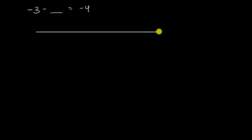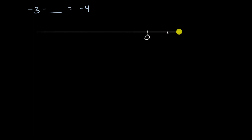Let me draw a straighter line. All right, that's a pretty good number line. I'm gonna be dealing with negative three and I'm gonna subtract something from it to get to negative four, so let me focus on the negative end here. So let's say this is zero, that could be positive one. Then I have negative one, negative two, negative three, negative four, negative five, let's go negative six.